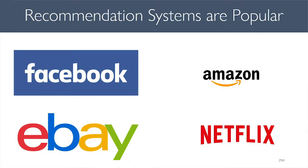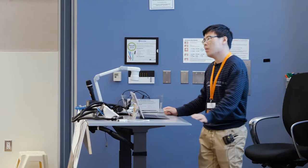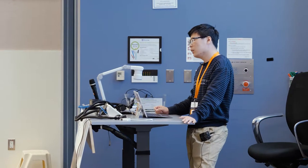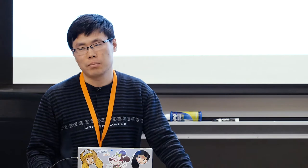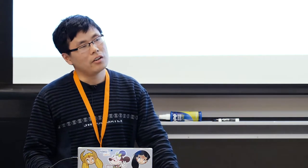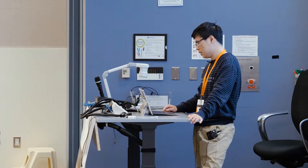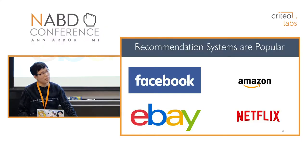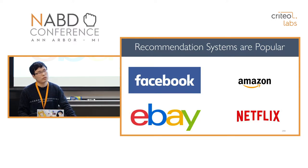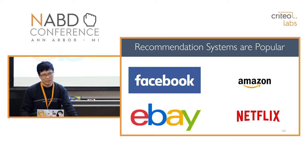Recommendation systems are quite popular nowadays because many companies, including Criteo, are using recommendation systems as a key component in their products. For example, Facebook uses a recommendation system to suggest friends to users, Amazon and eBay use recommendation systems to suggest items for users to buy, and Netflix uses one to suggest movies for users to watch.